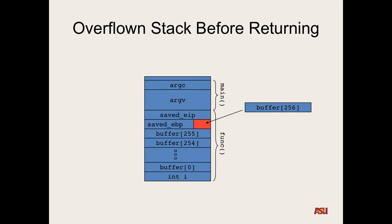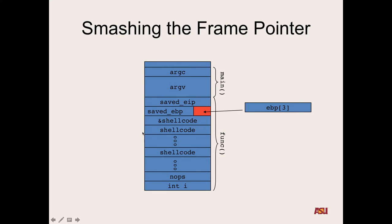We want EBP to point four bytes below the address of the shellcode, so when it does pop EBP, it moves up there, and then ret jumps to whatever is above that — the address of the shellcode. You could use NOPs plus shellcode plus repeated addresses of shellcode so your base pointer only needs to land anywhere in that region. You need to first find the address of your buffer — just like with a regular stack overflow.